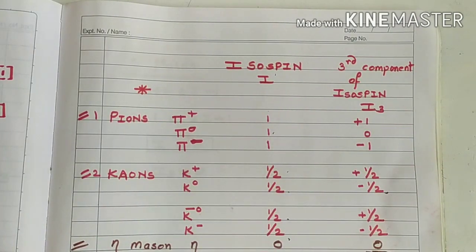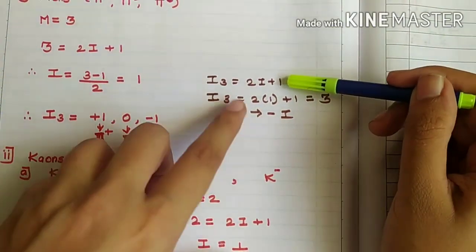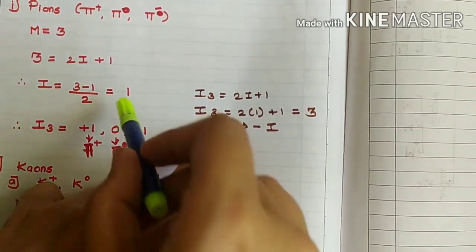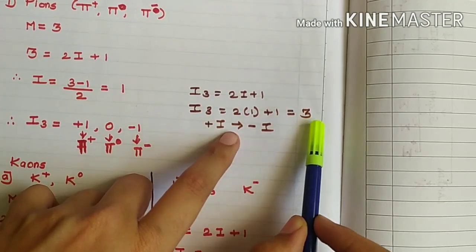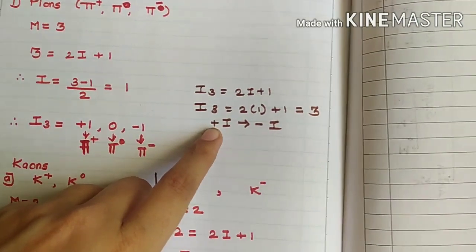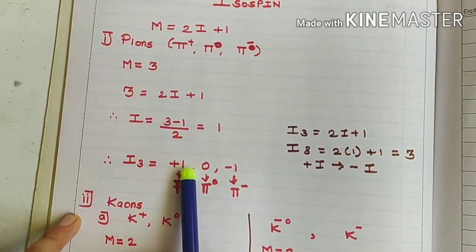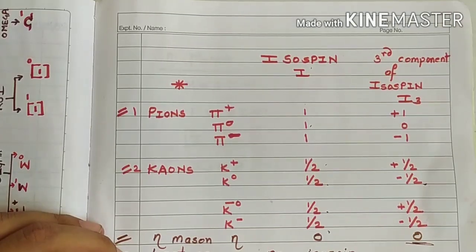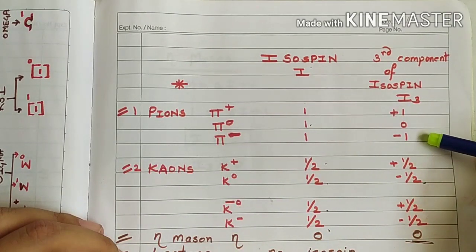Now let's find the third component of isospin for these 3 pions. The number of i3 values is given by 2i + 1. Since i = 1, we get 2(1) + 1 = 3, meaning i3 has a total of 3 values ranging from +i to −i. So the i3 values are +1, 0, and −1. This means +1 is the value of i3 for pi plus, 0 for pi naught, and −1 for pi minus.